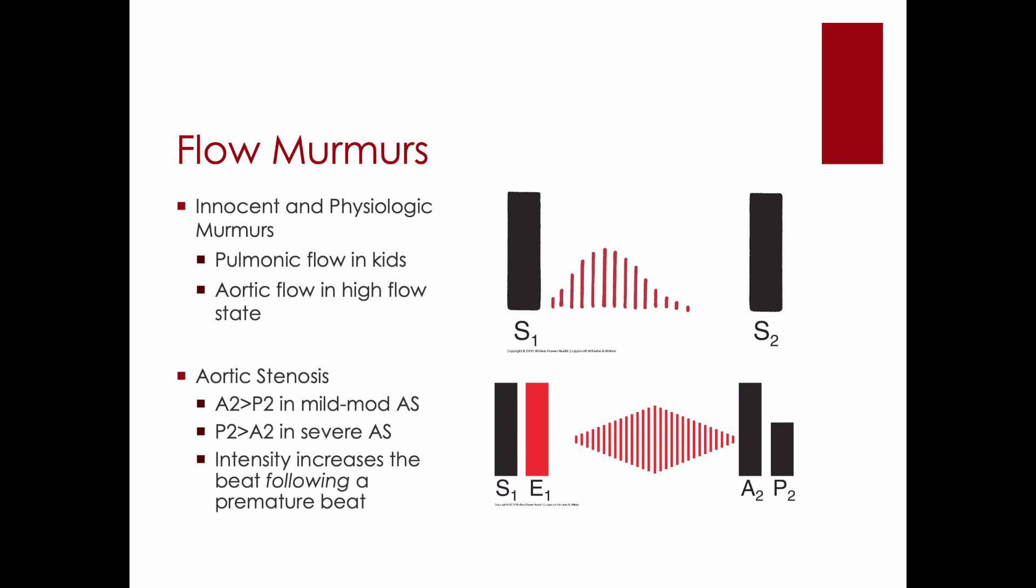Why does that happen? The beat after the premature beat, well, the premature beat doesn't have much blood in it because it's early. It didn't have enough time to fill the ventricle. So the amount of blood it's squirting out is very little. But the beat after that, there's a compensatory pause. So the beat after the premature beat has lots of time for ventricular filling. And now when it contracts, the volume is going to be a much greater volume of blood and it makes a louder sound.